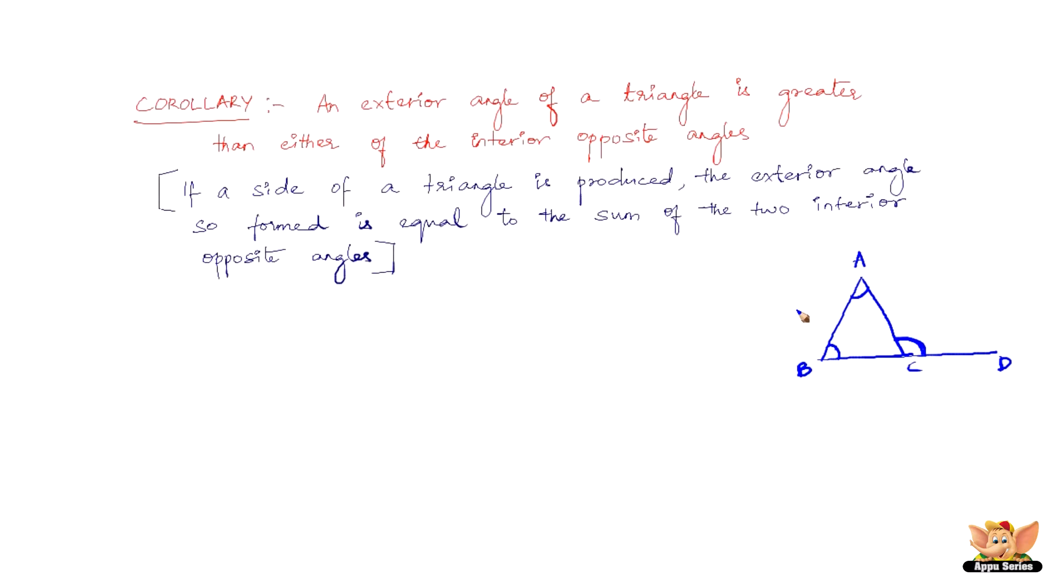So now, we've already proved this one. Now this statement here or this proposition here, an exterior angle of a triangle is greater than either of the interior opposite angles. This just goes on to say, from this theorem, if this angle is equal to this plus this, then this angle, that is angle ACD, is definitely greater than both of these angles.